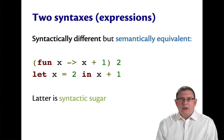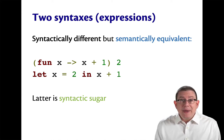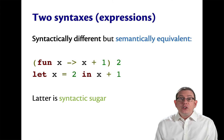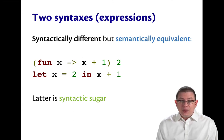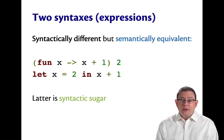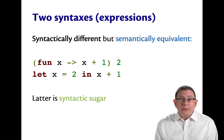Here's another example: `(fun x -> x + 1) 2` is syntactically different from `let x = 2 in x + 1`, but they are semantically equivalent. If that's not apparent, go back to the evaluation rules for each. For anonymous function application, the rules say to substitute the argument `2` for `x` inside the body expression, yielding `2 + 1`. The evaluation rules for `let` expressions say to substitute the binding expression for the variable name inside the body — substituting `2` for `x`, also yielding `2 + 1`. Either way, the same substitution and computation occur.